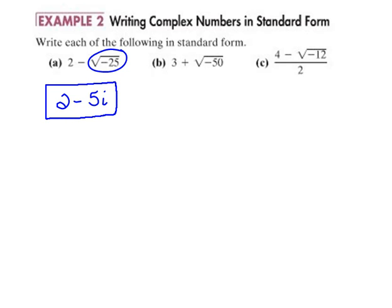Now here we have this next one that says 3 plus the square root of negative 50. Well, again I'm just going to focus on cleaning up this radical first, and we know that because there is a negative here we're going to have to tack an i on at the end. So let's just focus on the square root of 50.